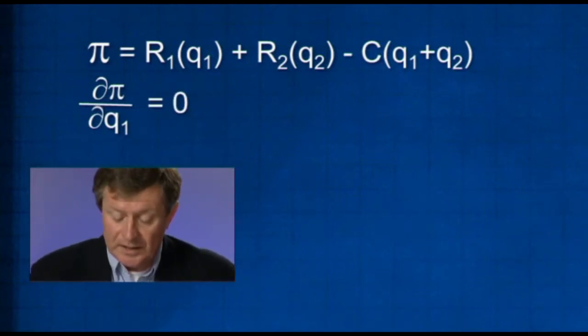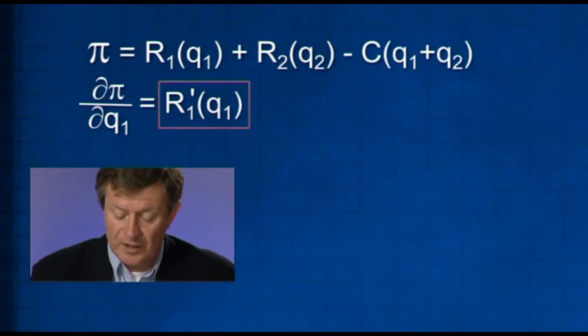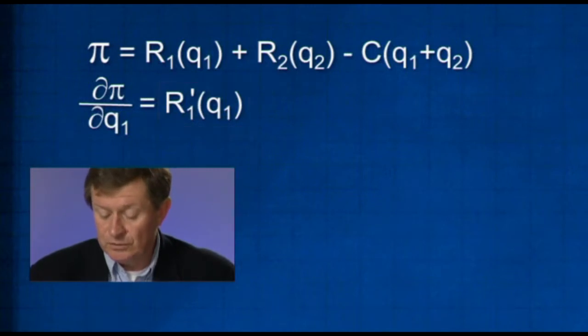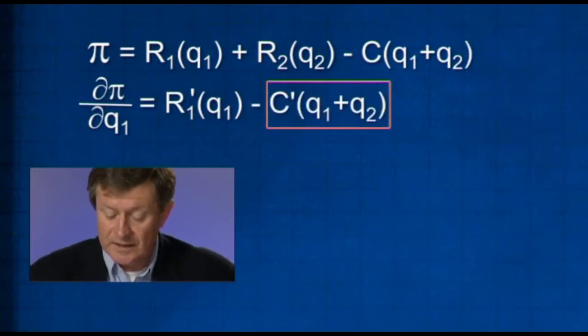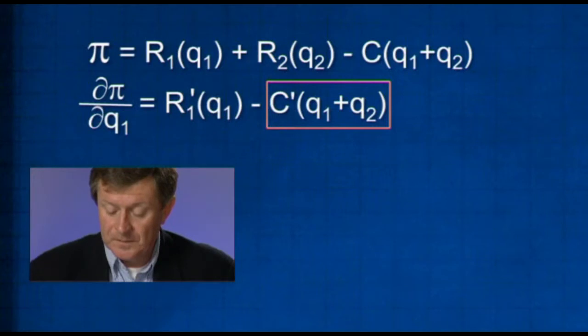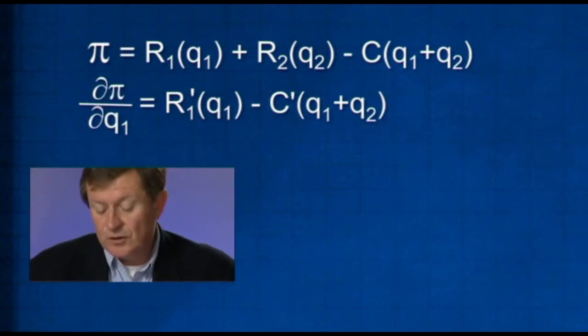What is dπ/dQ1? Well, it's the derivative of the revenue one term first, R1 prime of Q1. There's no Q1 involved in the second term, so that disappears, minus the derivative of C with respect to Q1. So the marginal revenue from market one must be equal to the marginal cost in market one.